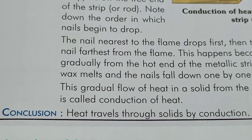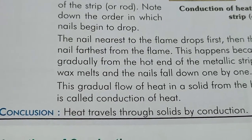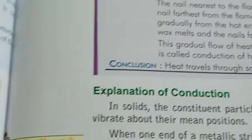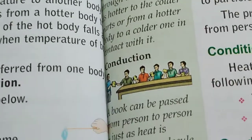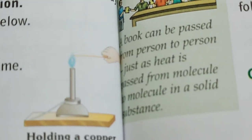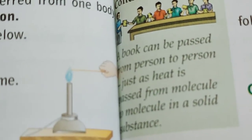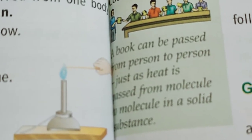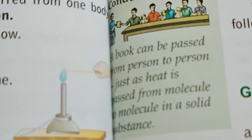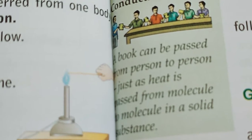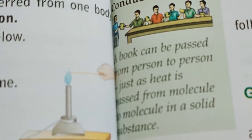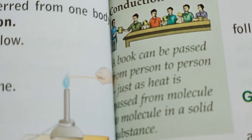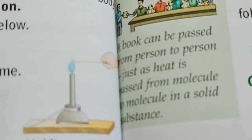From this activity we can conclude that heat travels through solids by conduction. That is why if you hold a metallic spoon over a flame, you cannot hold it for long. As soon as the heat travels from the hotter end of the spoon towards your hand, you have to lift the spoon quickly.